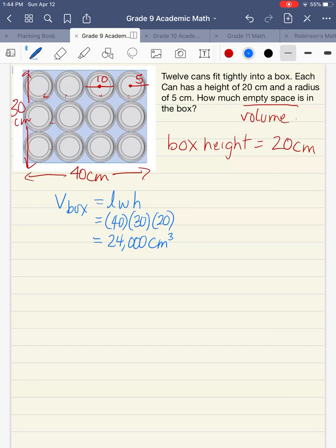We have the volume of our box and now we're going to do the volume of a can. Our cans are cylinders. So the formula for volume of a cylinder is pi times radius squared times height. I'm going to use 3.14 for pi. You may choose to use the pi button on your calculator, in which case your answer will be slightly different from mine.